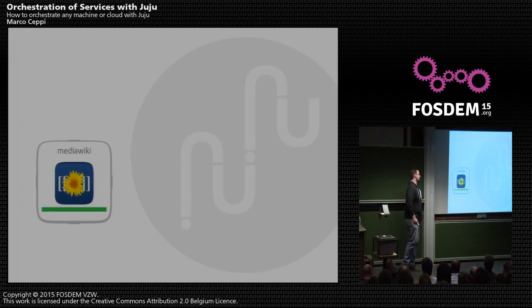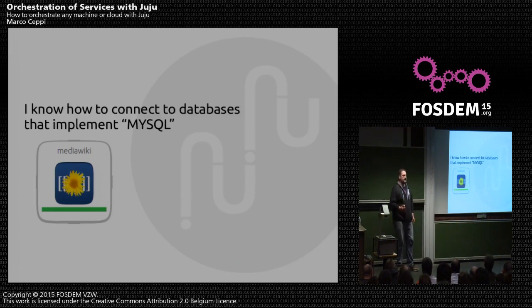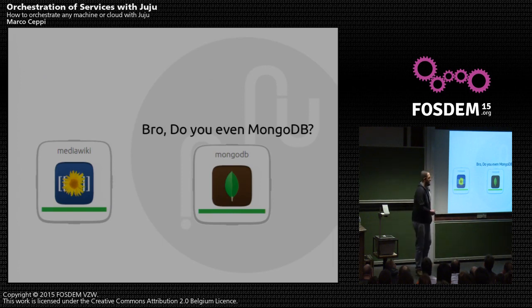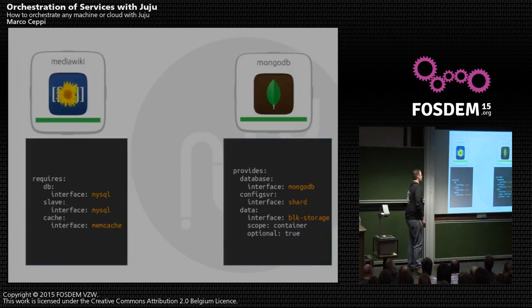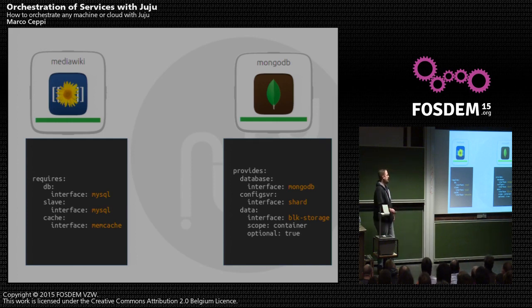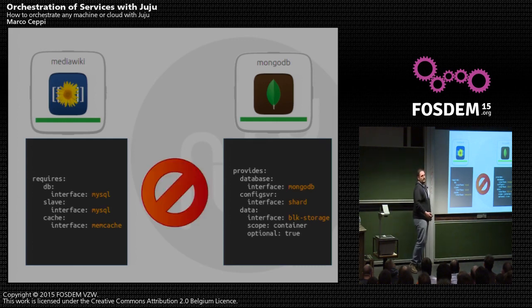Given the example: I'm MediaWiki, so I know how to connect to databases that implement MySQL. Whenever I try to relate this to MongoDB, that's not going to work, because MongoDB does not implement MySQL. Looking at the YAML, we see that it requires MySQL. We don't have MySQL anywhere on MongoDB — so this relationship will not work. If you try to do it on the command line, it's going to no-op; try to do it through the GUI, it's going to complain. It won't even let you draw it.